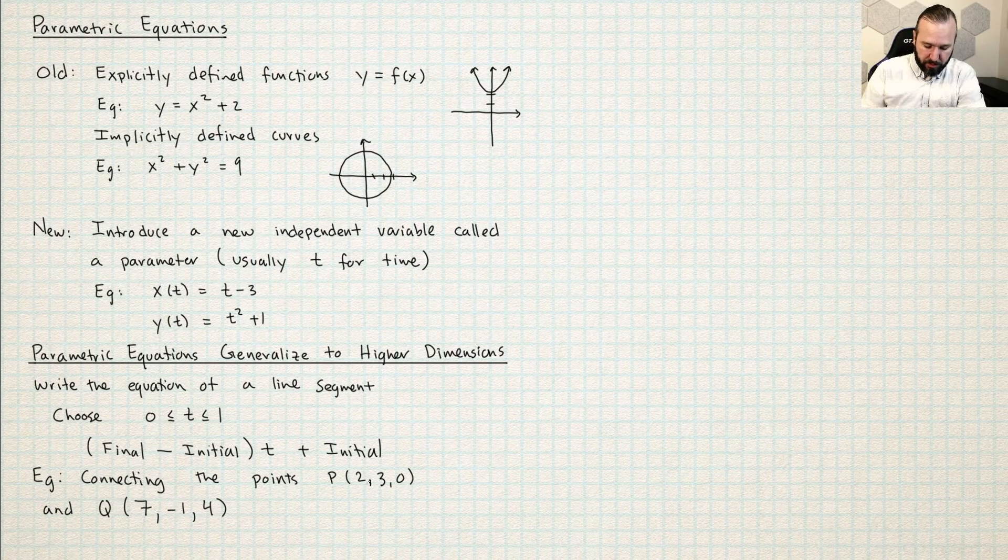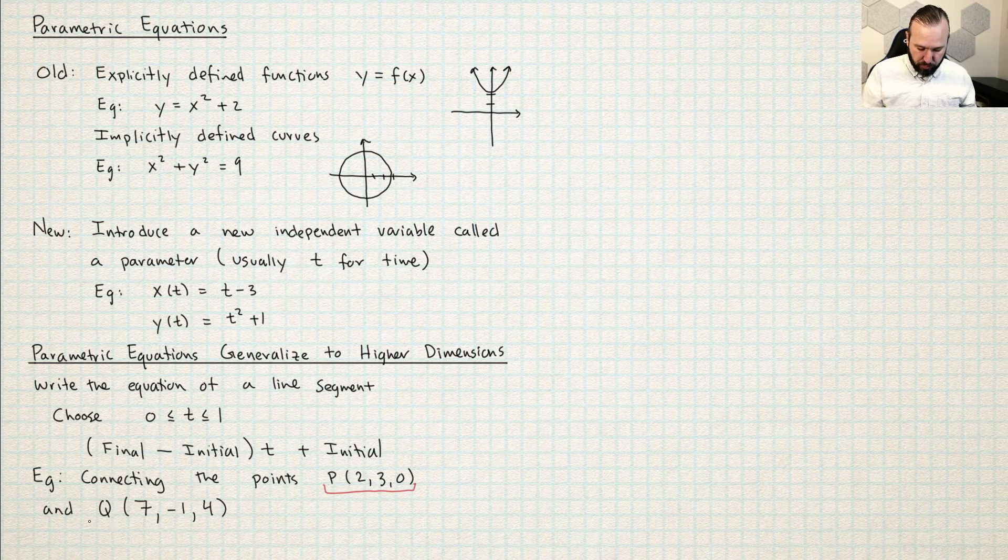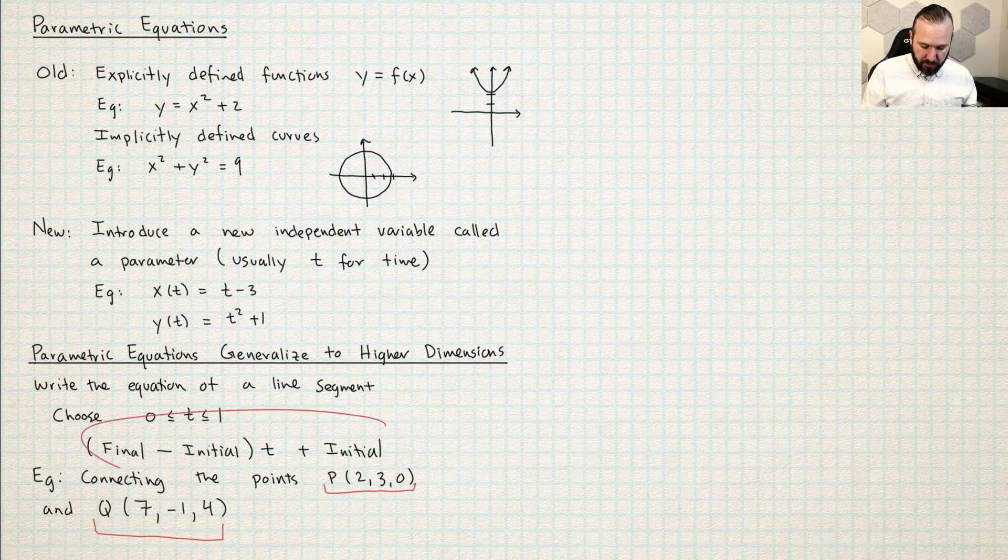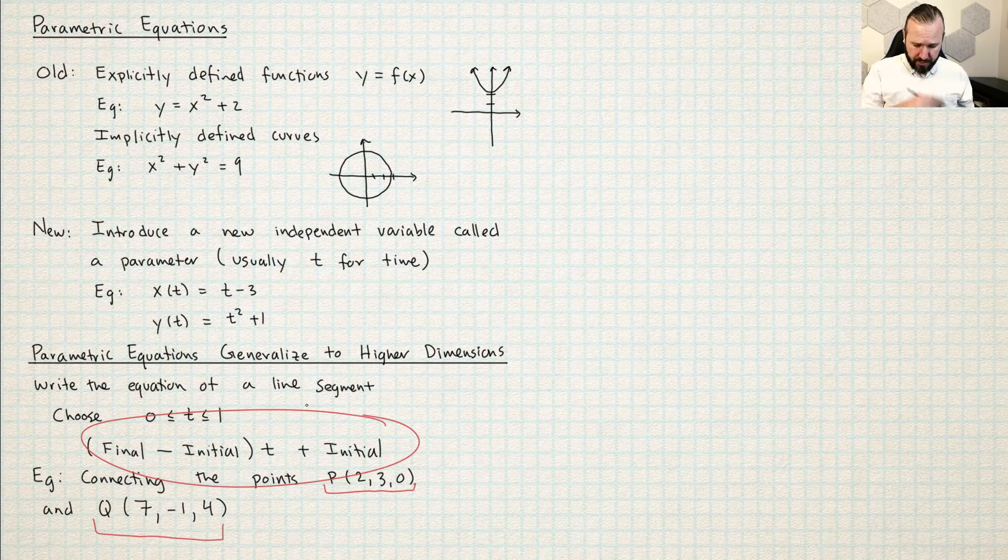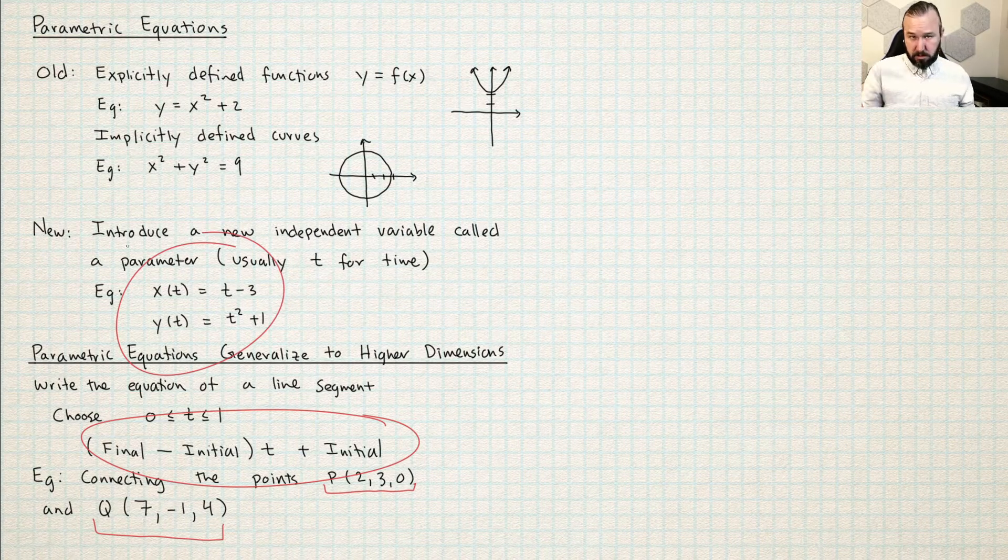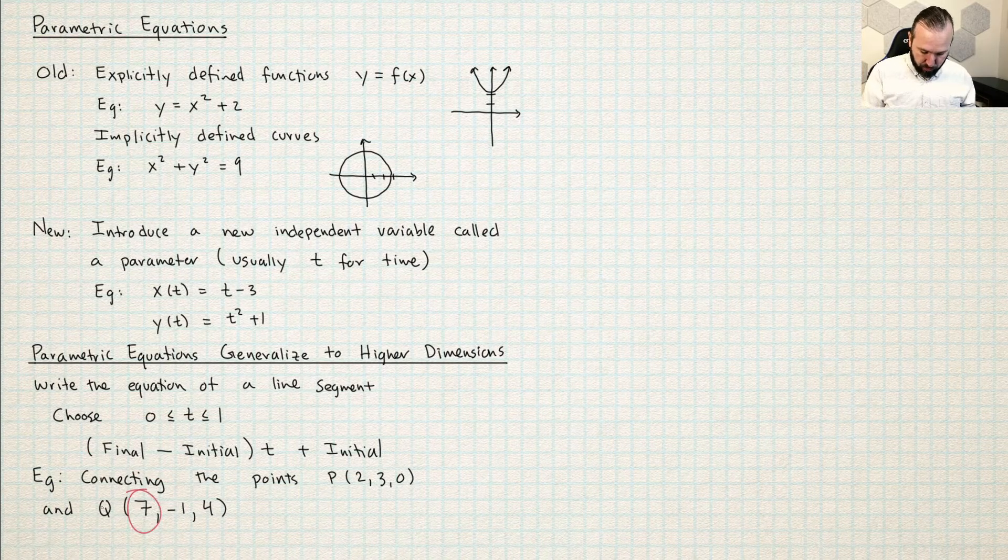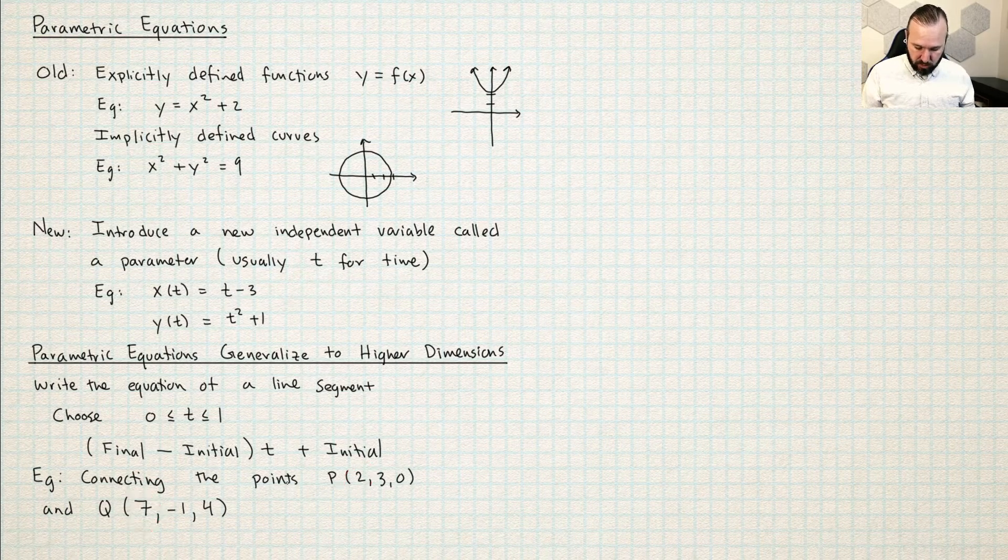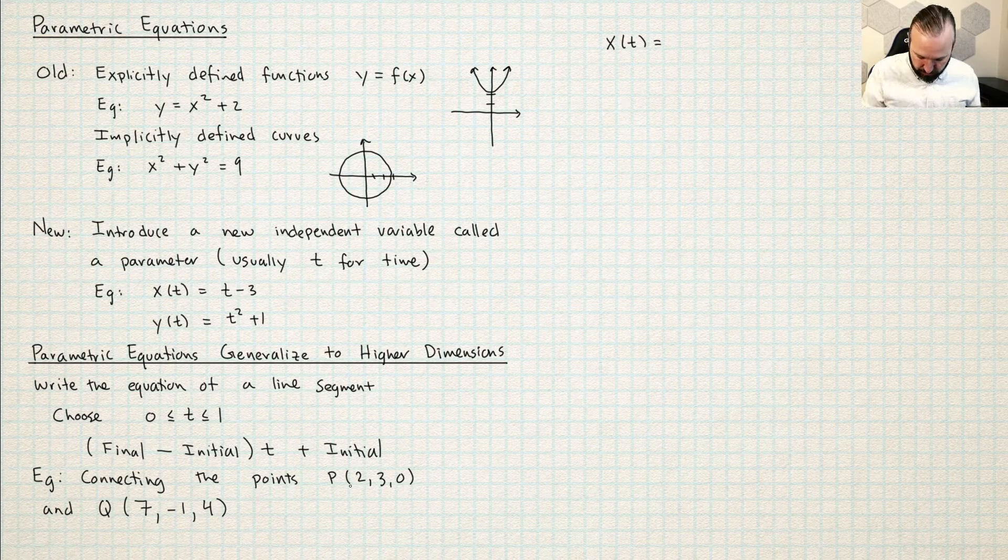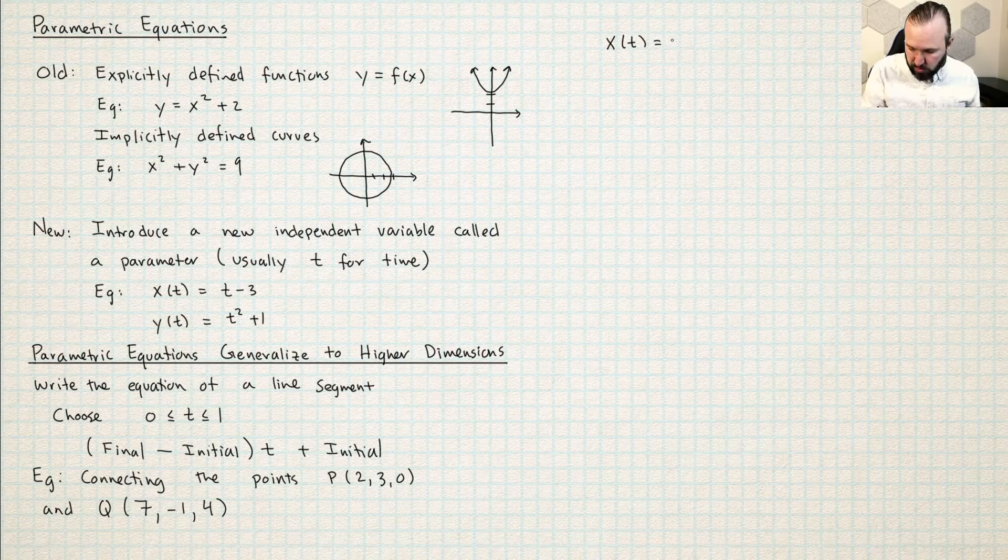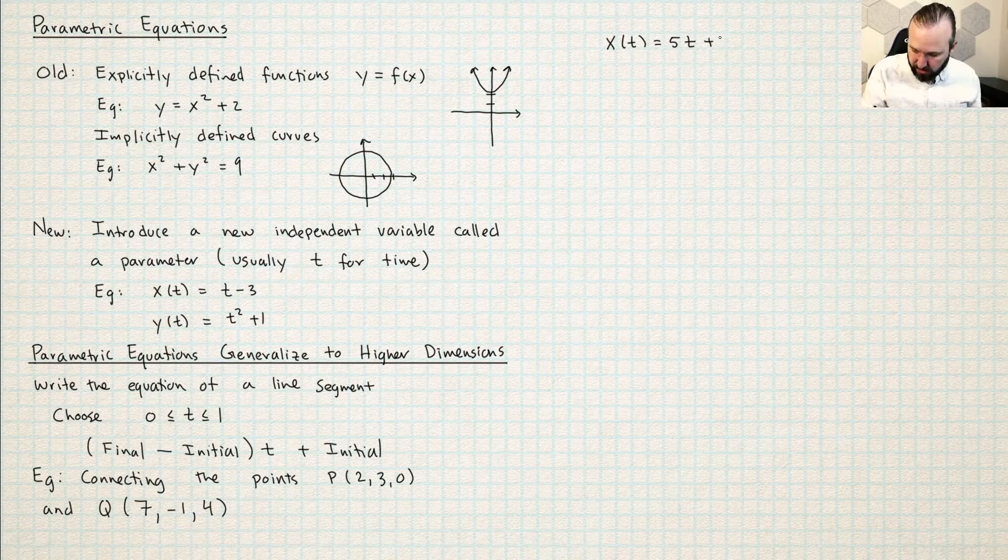So we're going to write the equation of the line that connects these points. So here is the initial point (2, 3, 0) and here is the final point (7, -1, 4). And then I'm just going to use this method final minus initial times t plus initial. And that's going to give me something like this parametric equations for a line. So the final point in the x coordinate is 7 and the initial point is 2. So for x of t, I got final minus initial, so 7 minus 2 is 5, plus the initial x, the initial x is 2.